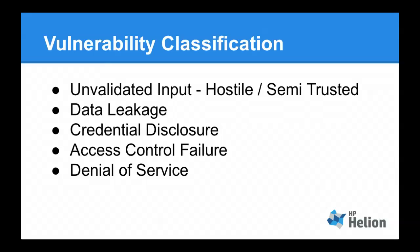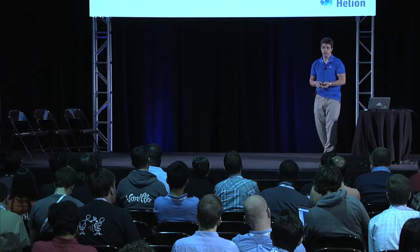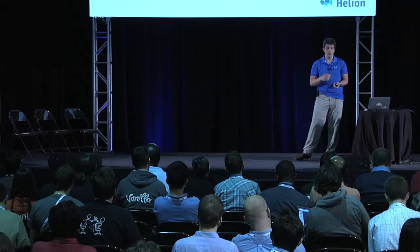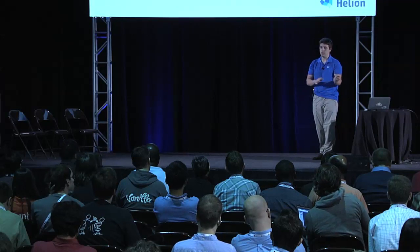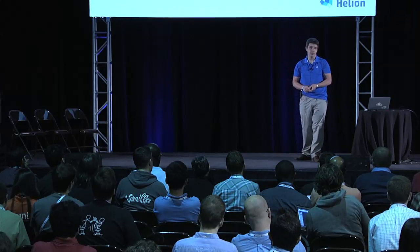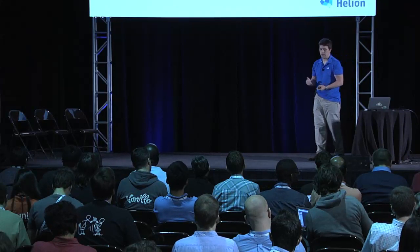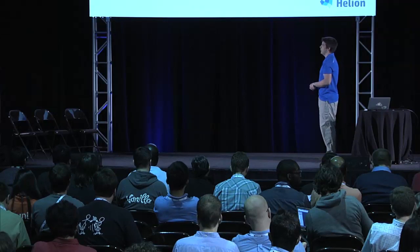Looking at vulnerability classification — we're focused on the critical ones here because there are some really interesting vulnerabilities. We see unvalidated input all over the place. There's also data leakage, some really interesting stuff in Nova around data leakage. Credential disclosure and access control failures — unfortunately ACF is going to hit Keystone a lot. And denial of service. I'm not entirely comfortable with denial of service as a vulnerability classification because to my mind it's an impact of a vulnerability — you have a buffer overflow or resource exhaustion that results in your system no longer being stable, and that result is the denial of service.